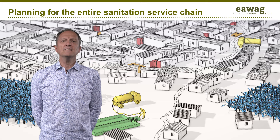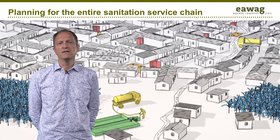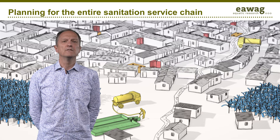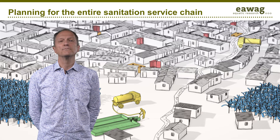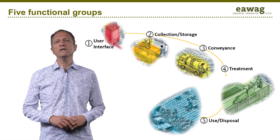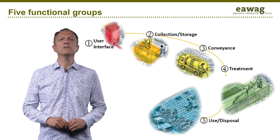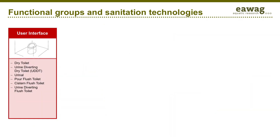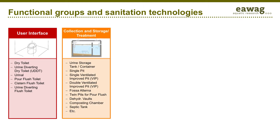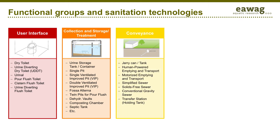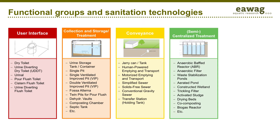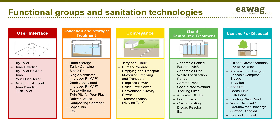The compendium systems and technologies cover the entire sanitation chain, from the user interface to safe disposal or reuse. The color-coded five functional groups are: the user interface or toilet, the onsite collection and containment technologies, the emptying and conveyance technologies, the treatment technologies, and finally the use and/or disposal options for the different treatment products.